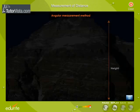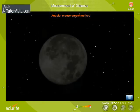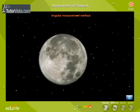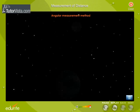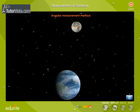Angular measurement method. How do we measure large distances such as the height of a mountain or the size of astronomical objects? We use angular measurement method in such cases. Let us now measure the diameter of the Moon by angular measurement method.